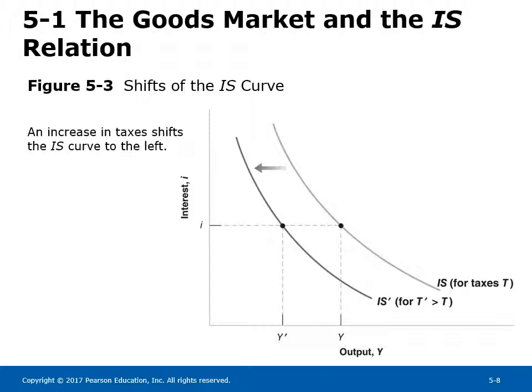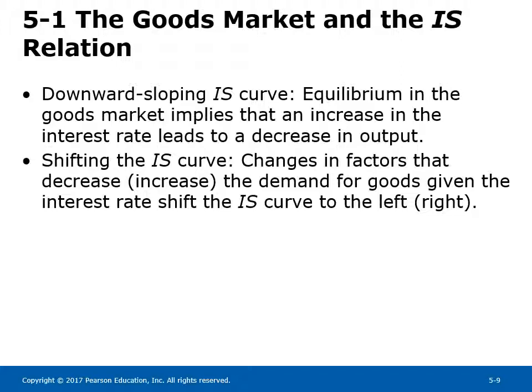Two important points about the IS curve: First, the IS curve is downward sloping — equilibrium in the goods market implies that an increase in the interest rate leads to a decrease in output. Second, the IS curve shifts in response to changes in factors that affect the demand for goods given the interest rate — increases shift the curve right, decreases shift it left. An increase in T, a decrease in G, or a decrease in C0 shifts the IS curve to the left.